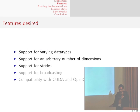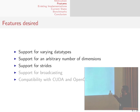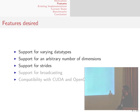So, what do we want as features for a new basic object? Support for varying data types — not only floating point in single precision, but also integers, doubles, and complex as well.